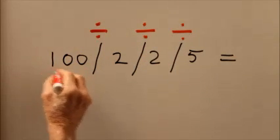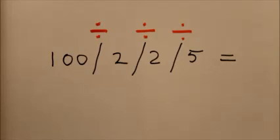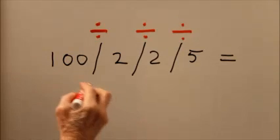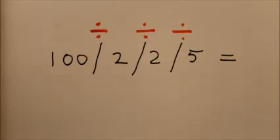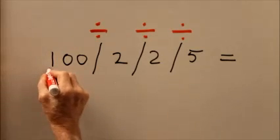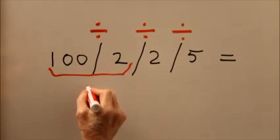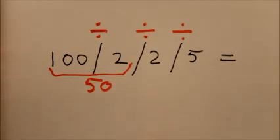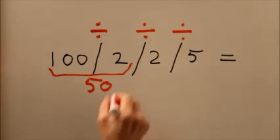When you see operations that are all the same and they're in a series or sequence like that, you just proceed from left to right. So you start with 100 divided by 2, that gives you 50. You divide...